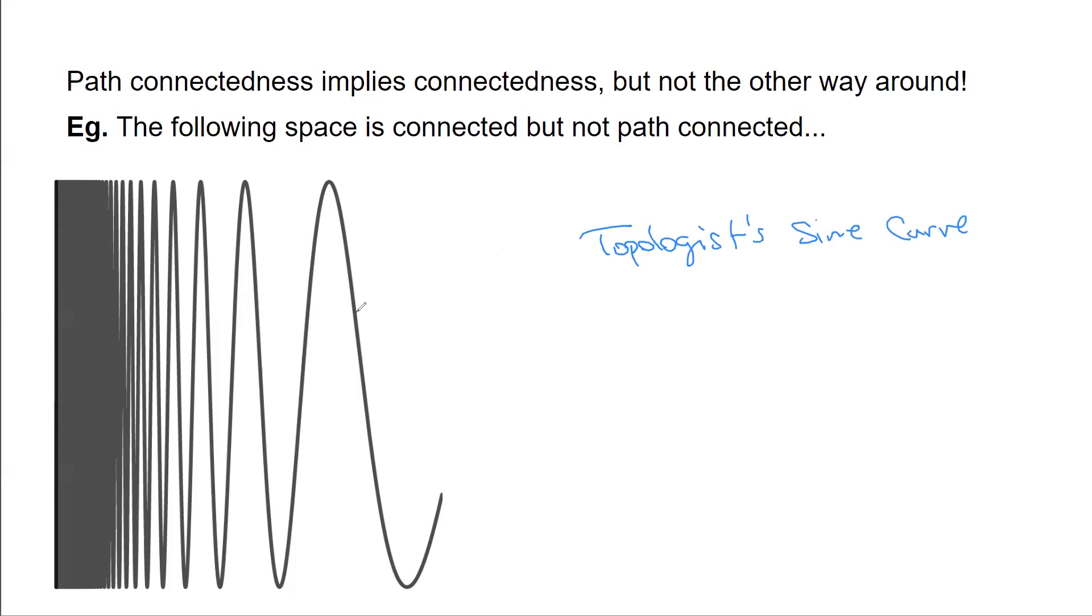So let me tell you what the topologist's sine curve actually consists of. The points over here, kind of to the right, these are of the form x sine 1 over x. Maybe you've seen the function sine in math class. These points are the pairs of coordinates x sine 1 over x for x greater than 0, and we need x to be greater than 0 because you can't divide by 0.